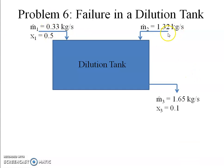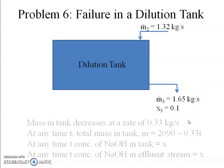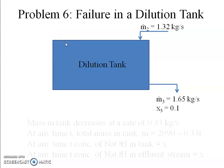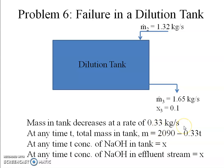At t = 0 the NaOH stream fails, so only water enters and solution continues to exit at 1.65 kg/s. The total mass in the tank decreases at 0.33 kg/s; at any time t it is 2090 − 0.33t kg. Let x be the NaOH mass fraction in the tank at time t. Because the tank is perfectly mixed, the effluent concentration is also x, falling from an initial value of 0.1.